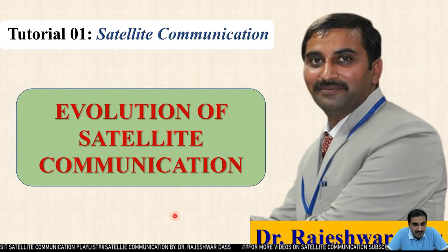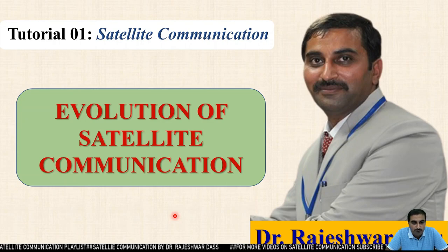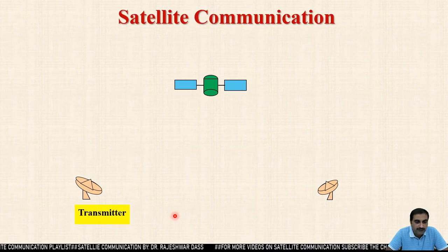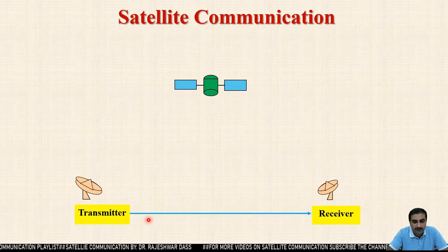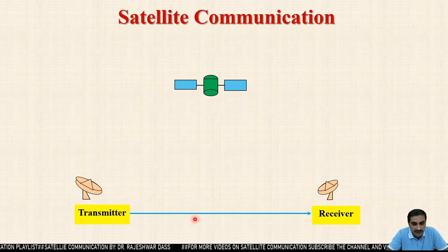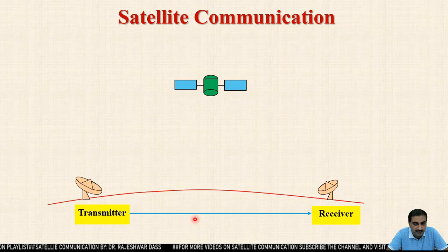Today we will learn about the evolution of satellite communication. Before starting, let's have a look at the basic communication system. When the transmitter is connected with the receiver by a wire, this type of communication is known as wired communication. If it is wirelessly connected, then it is known as wireless communication.